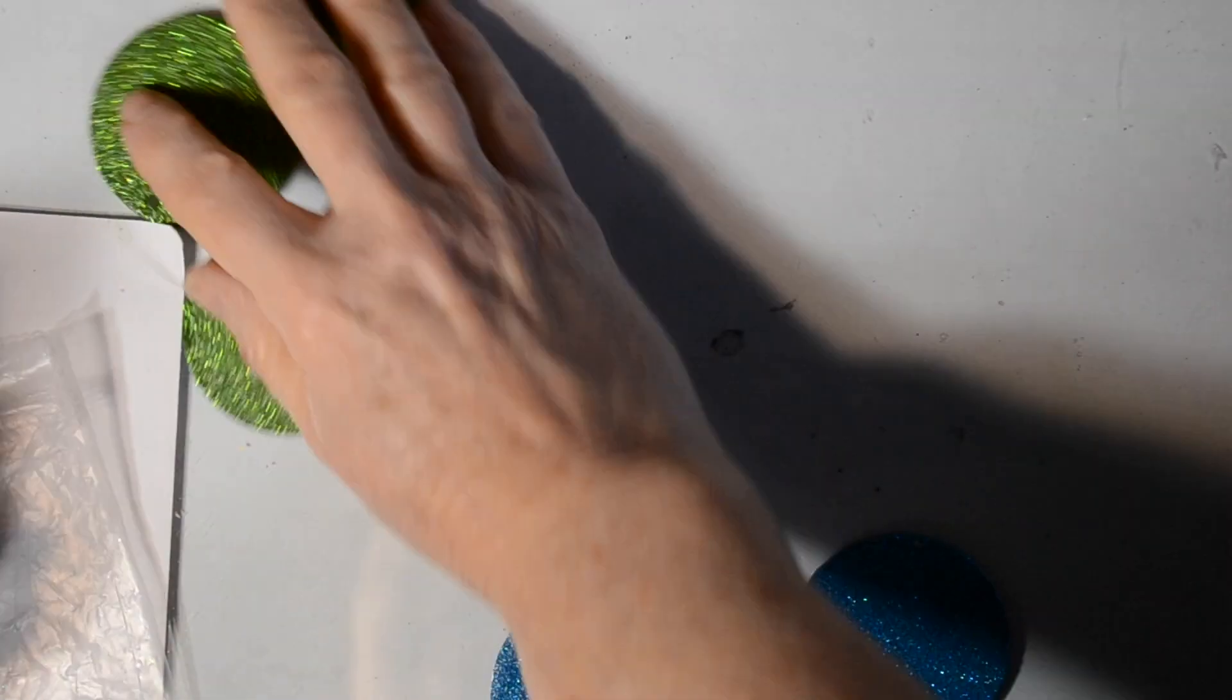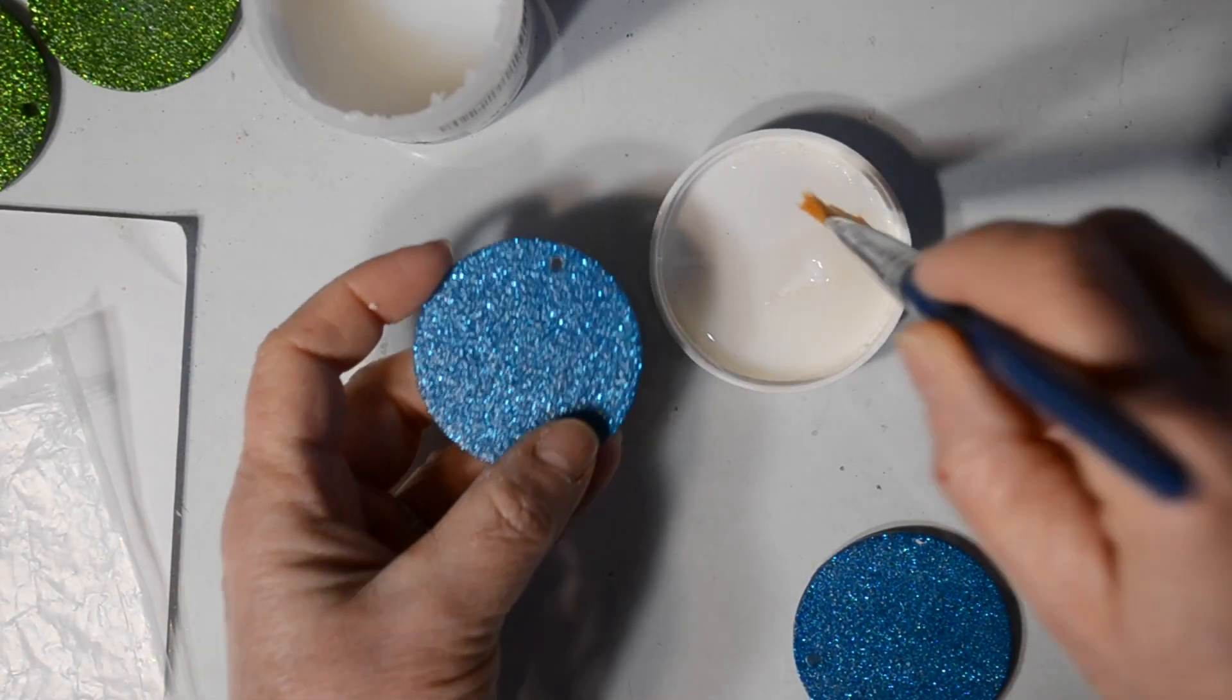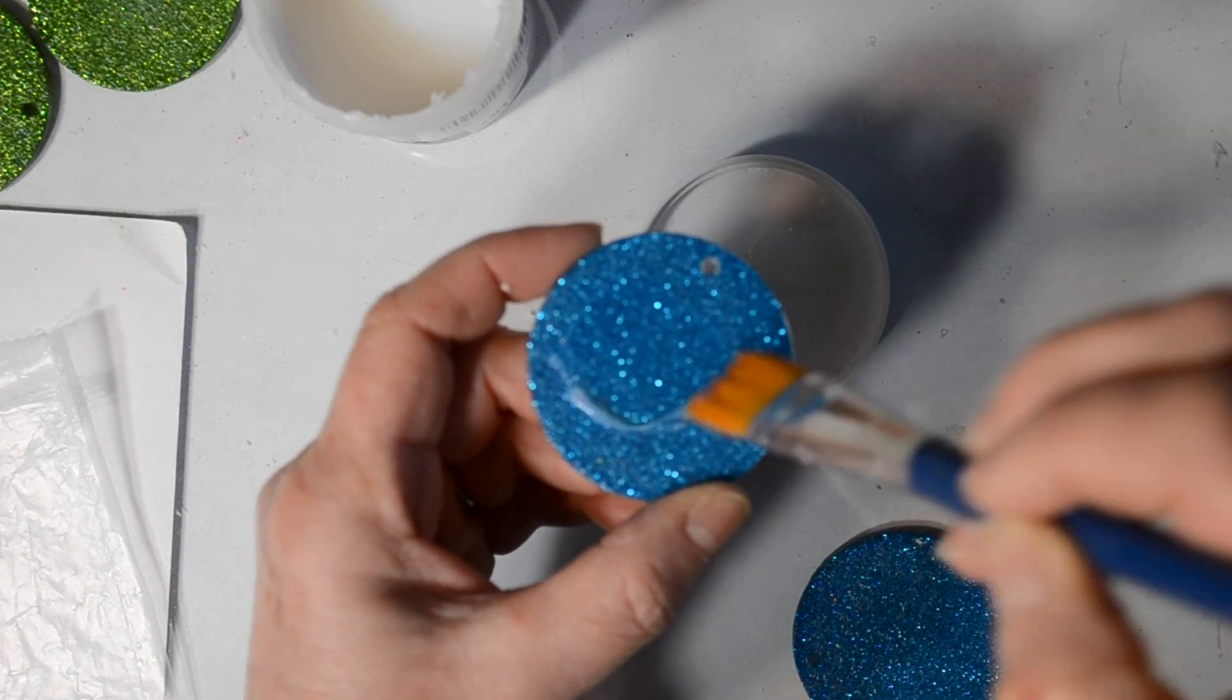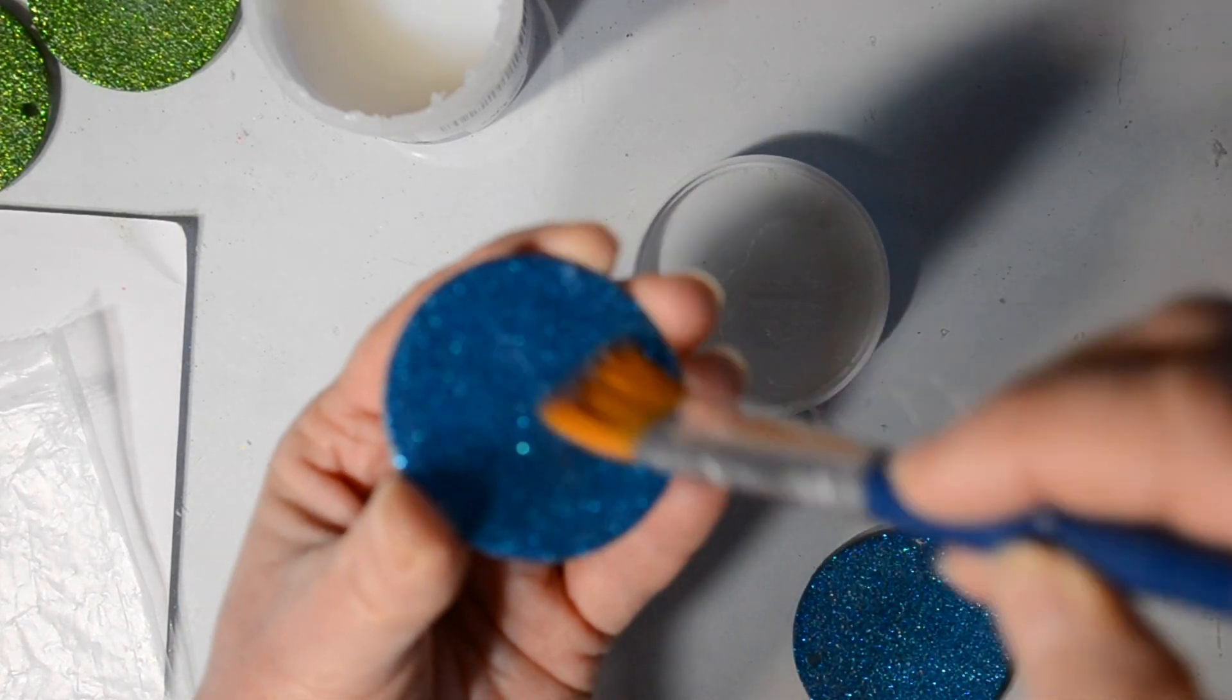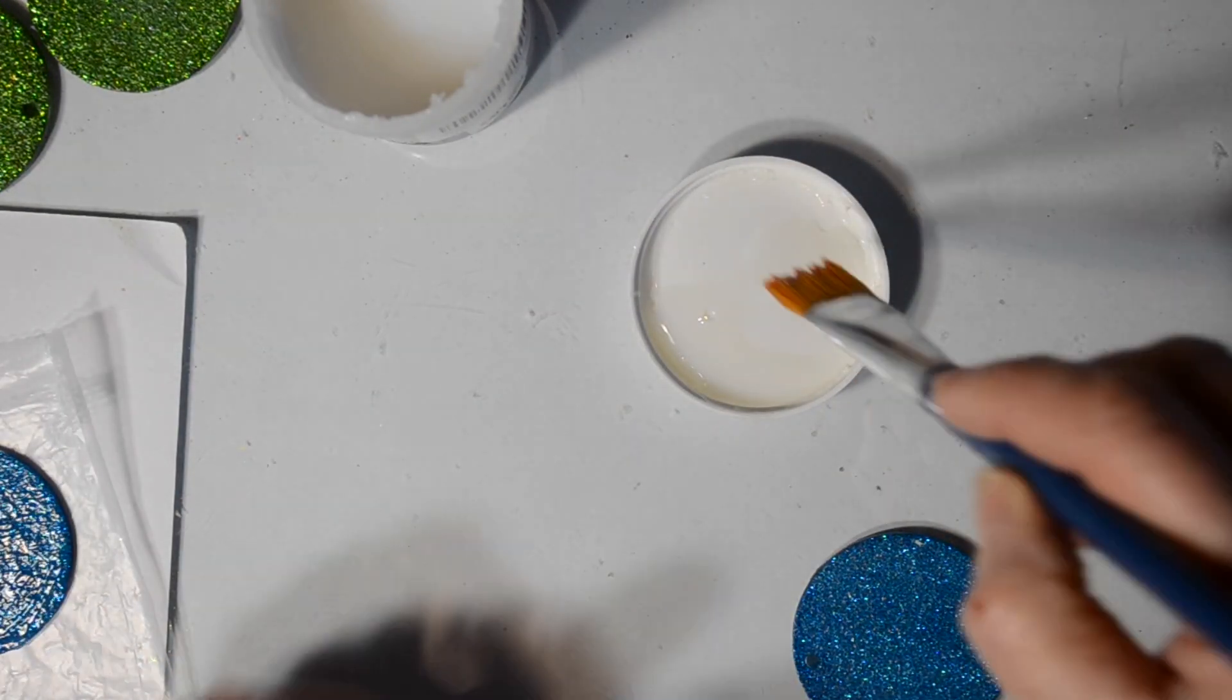We're going to go ahead and coat the back again. Now I will say that as we do this, we want to come in and make sure that the hole of the keychain is not getting clogged up. Make sure every time that you stick something through there and just make sure that you've still got that hole inside your keychain.